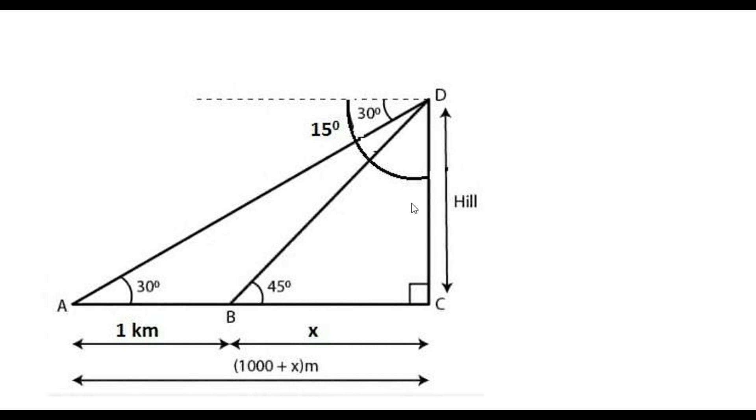So if this angle is 45 degrees, this angle should also be 45 degrees. If BC is equal to DC. Why? Because this is 45, this is 45, this is 90. So the side BC must be equal to DC.